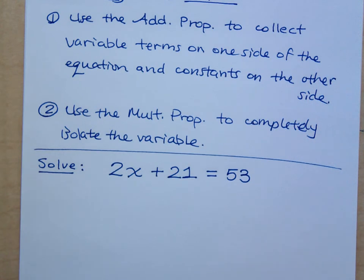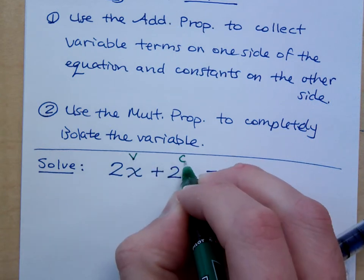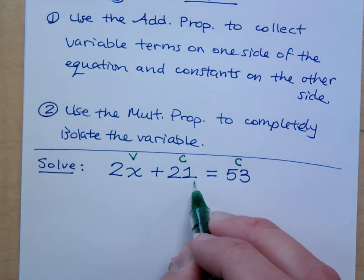If you look at this and label these, this is a variable term, this is a constant, and that's a constant. So the easiest and quickest way for me to separate variables from constants is to move this guy to the other side. Do you all agree?